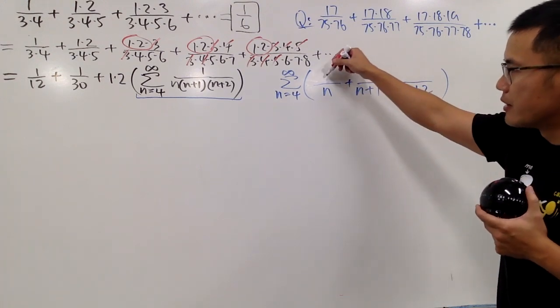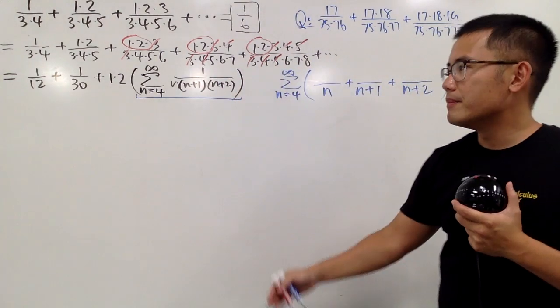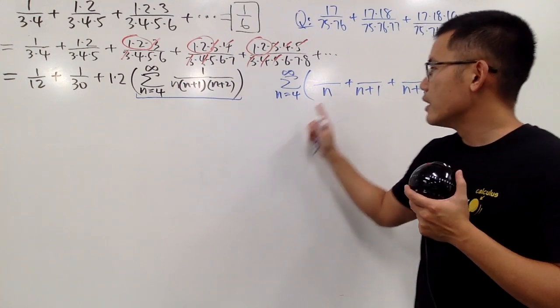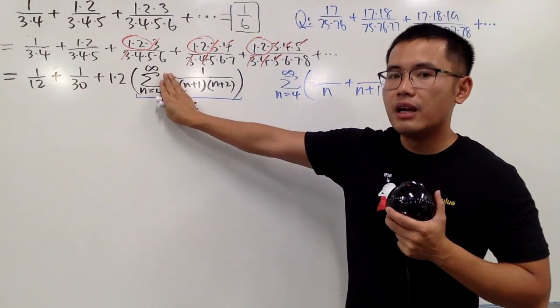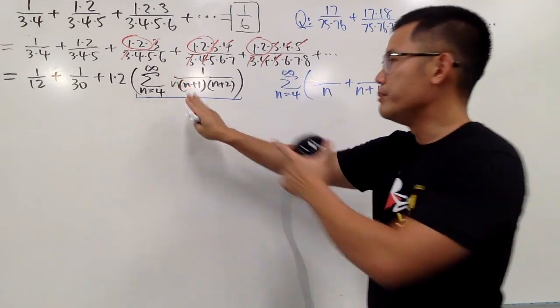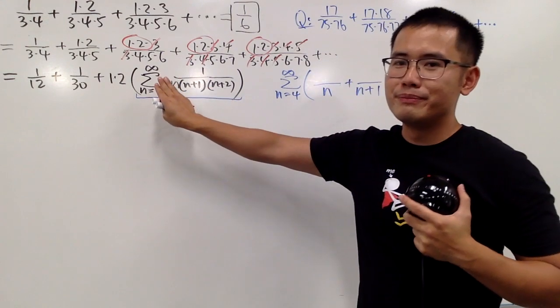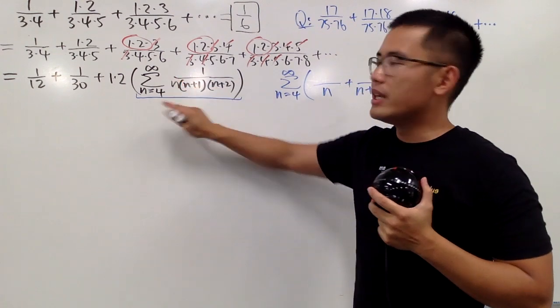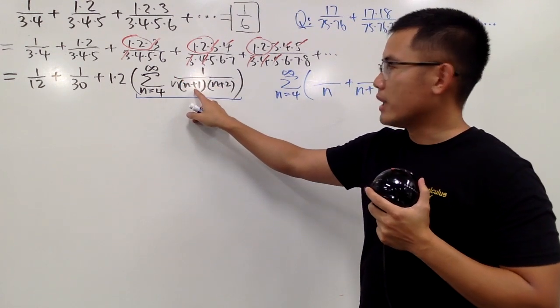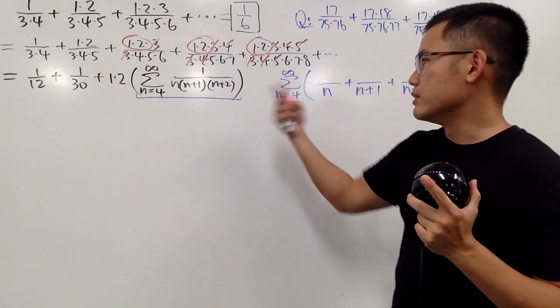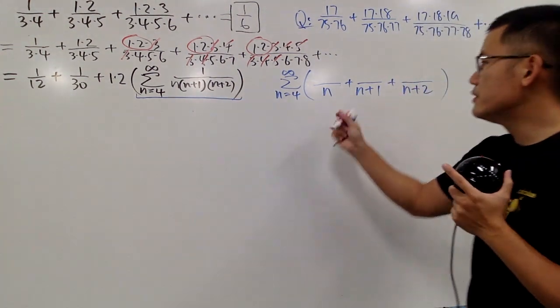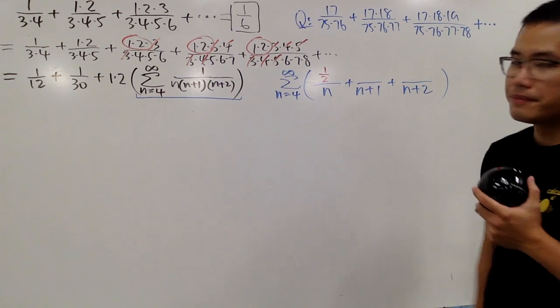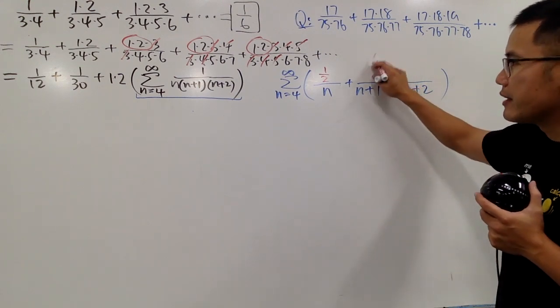We cover up the same denominator, and we have to ask ourselves, how can we make the n equal to zero? n has to be zero. And you put the zero into this n and that n, so we get one over zero plus one is one, times zero plus two is two, so one times two on the bottom. Therefore, we have one over two right here. And we'll do the same thing right here.